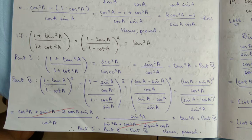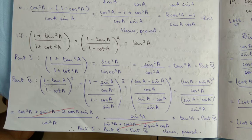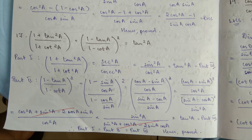Part 2 to part 3, part 3 to part 2, part 1. Part 1 is equal to: 1 minus tan A by 1 minus cot A, whole square. tan A is sin by cos, cot A is cos by sin. Take LCM — cos A.